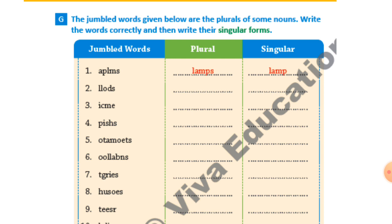Fifth one: O-T-A-M-O-E-T-S — the correct answer is 'tomatoes'. Tomatoes is the plural form. To get the singular, I remove 'es' from the end, giving me 'tomato'. Sixth one: B-A-L-L-O-O-N-S — the answer is 'balloons', and the singular noun is 'balloon'.